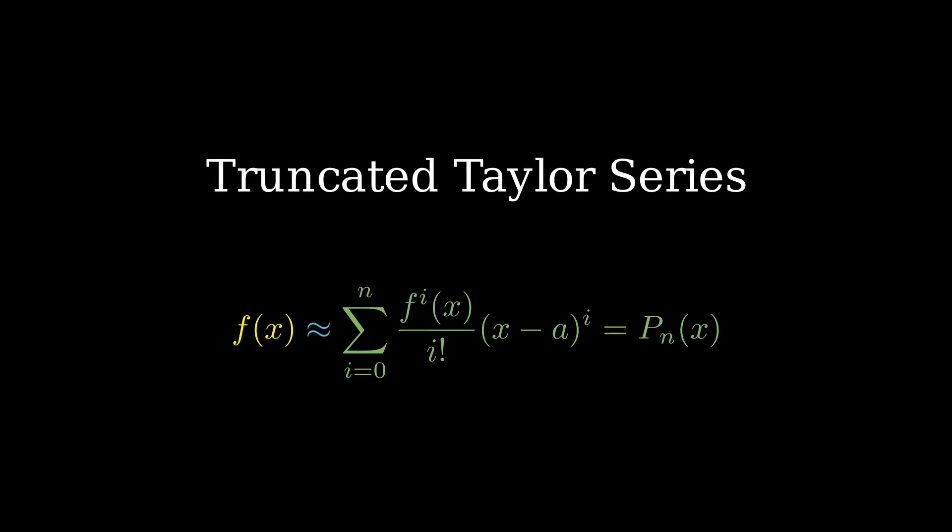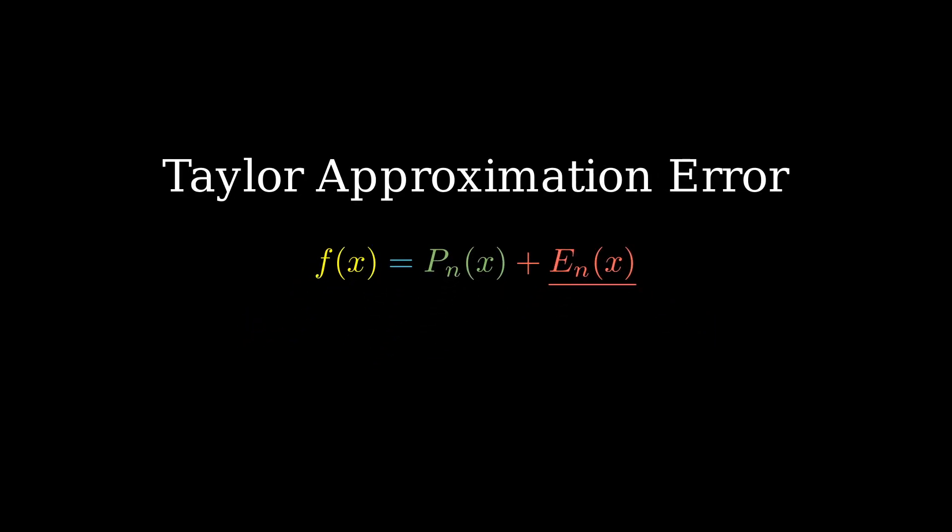Writing n terms of the approximation centered at x equals a, we have that the function is approximately equal to the first n terms of this series, which comes from the definition of the Taylor series, and we'll just denote that as P_n(x), meaning the nth polynomial describing the Taylor series approximation of f(x). Now what's left over is the error we'll call E_n(x), and that's a function describing the error in the approximation of f(x) that uses n terms, P_n(x).